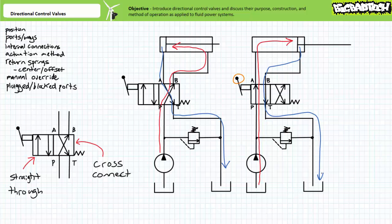When an operator releases the manual lever, the spring offset returns the valve to the cross-connect position and fully retracts the cylinder. Note this particular two-position, four-way directional control valve only offers full extension and full retraction — there is no way the hydraulic cylinder can be paused mid-extension or retraction. Other valve configurations allow the cylinder to be stopped in mid-stroke and maintain position, or allow it to be manually repositioned.